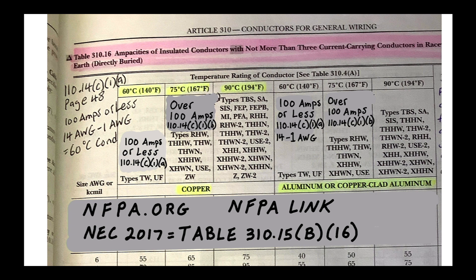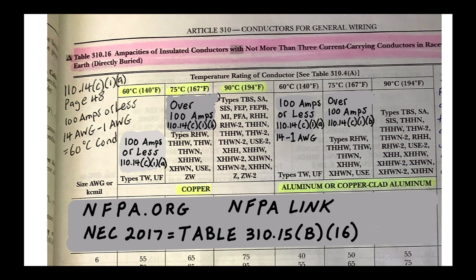I have notes reminding myself that for the 60°C column I need to check 110.14(C)(1)(a) — that's on page 48 in my code book — which applies to 100 amps or less. I'm also noting that conductors 14 AWG through 1 AWG fall under that 60°C rule.